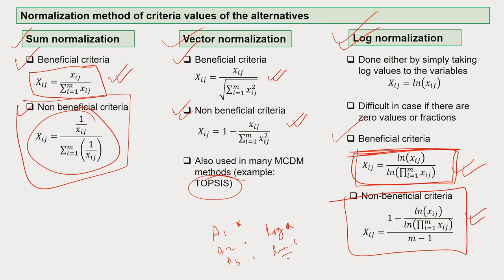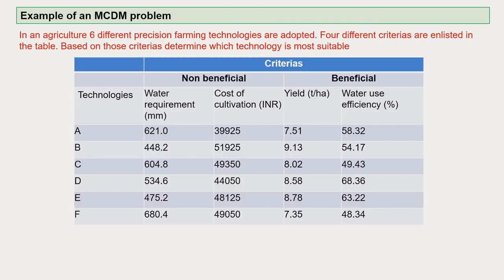It looks complicated, but when you get the actual value of each Xij, it becomes much easier to calculate. Let me try to explain these things with an example.